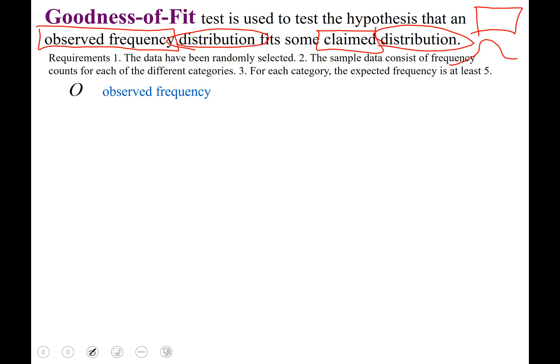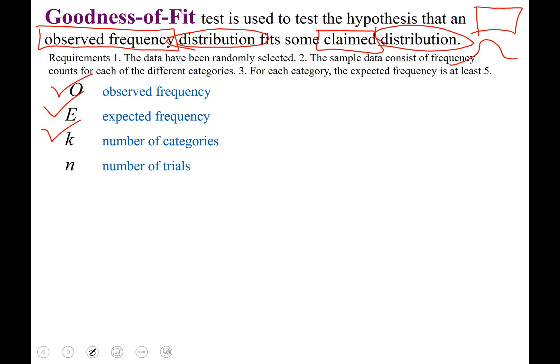A new variable we're going to use is capital O for observed frequency — whatever you actually observe. Capital E represents the expected frequency, what you expected to observe. Lowercase k is the number of categories. Lowercase n is the number of trials. And our degrees of freedom is k minus 1, so that's the number of categories minus 1.